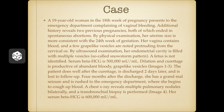By ultrasound examination, her endometrial cavity is filled with multiple vesicles — a so-called snowstorm pattern. A fetus is not identified. Serum beta HCG is 500,000. Dilation and curettage is productive of abundant bloody grape-like vesicles.